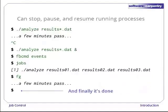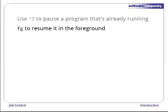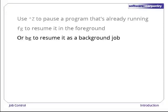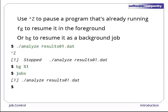Finally, when analyze finishes running, the shell gives us a fresh prompt as usual. The shell gives us one more tool for job control. If a process is already running in the foreground, ctrl-Z will pause it and return control to the shell. We can then use fg to resume it in the foreground, or bg to resume it as a background job. For example, let's run analyze again and then type ctrl-Z. The shell immediately tells us that our program has been stopped and gives us its job number. If we type bg %1, the shell starts the process running again, but in the background. We can check that it's running using jobs, and if we want, kill it while it's still in the background using kill and the job number.